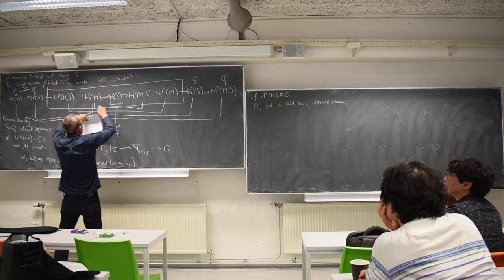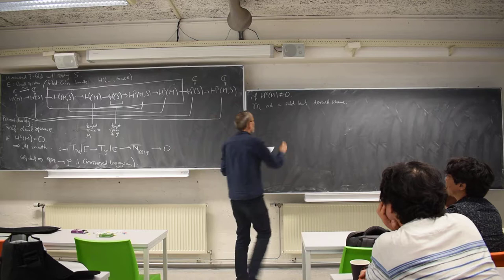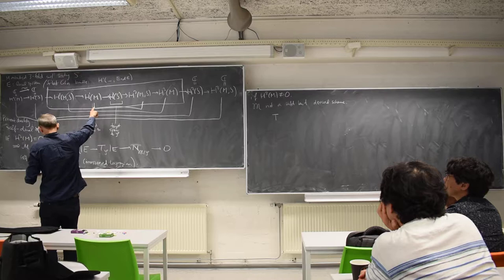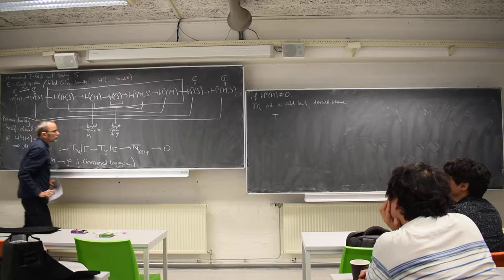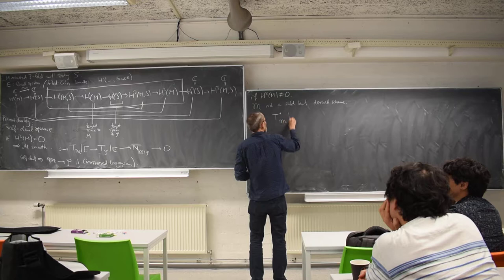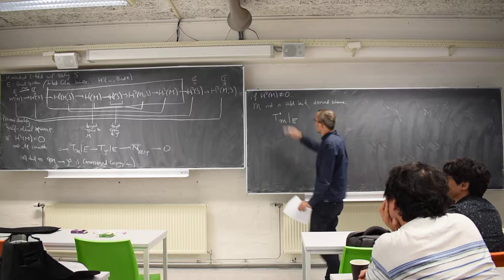It's not a short exact sequence anymore. Now I've got this five-term sequence, and I should write that instead. Let me write this H1 of M — that term which used to be the tangent bundle at the point e — the tangent space now turns into the tangent complex at the point e. Derived schemes don't have tangent spaces; they have tangent complexes. This is a complex in the derived category.